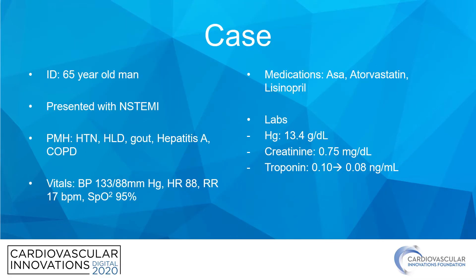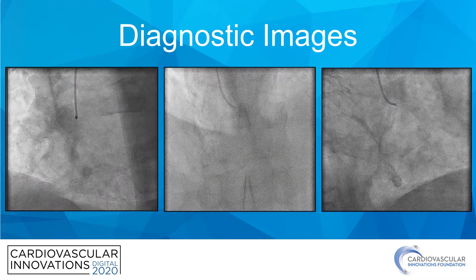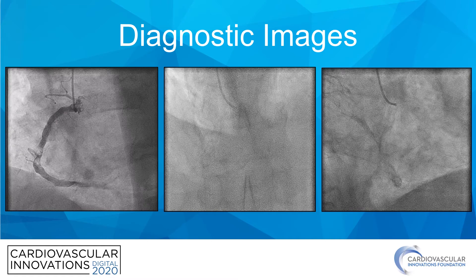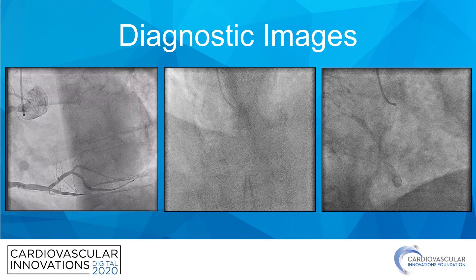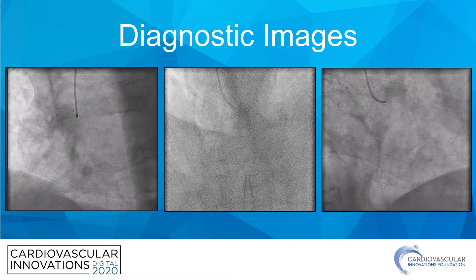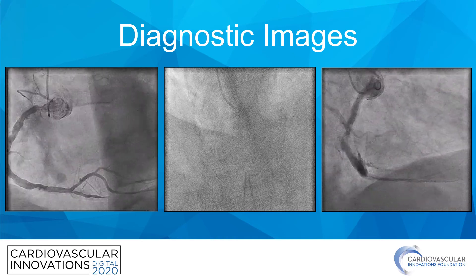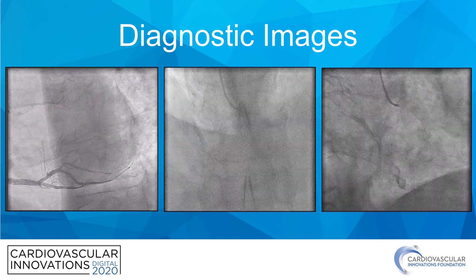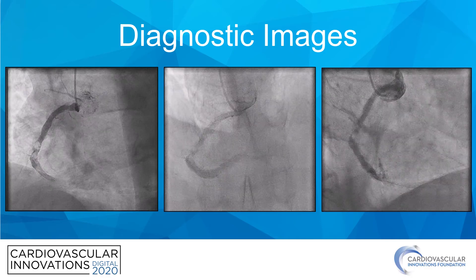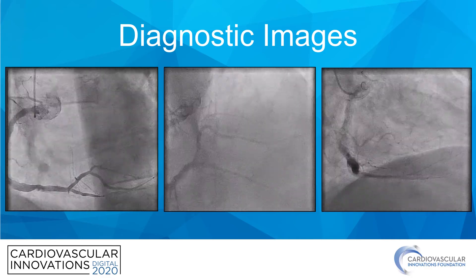I'm going to start off with this case of a 65-year-old man who presented with NSTEMI. His past medical history, vitals, and labs were stable, and his troponin was 0.10 and 0.08. The left system was normal with minimal luminal irregularities, and this is his right coronary artery — you can see that very calcified, thrombus-like lesion in the mid-RCA.